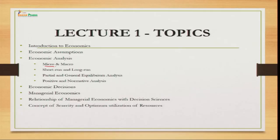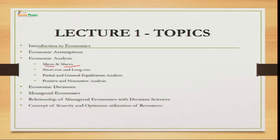Thereafter, we will talk about economic analysis. Here we are going to talk about micro and macro analysis, which is very important for us to understand, because economics is particularly divided into two broad areas: microeconomics and macroeconomics. We will also talk about short run and long run analysis, partial and general equilibrium analysis, and positive and normative analysis. These are the four broad categories of analysis we are going to understand. Thereafter, we will talk about economic decisions — decisions which help you understand what to produce, when to produce, how to produce, whether the resources are used economically, and whether the economy is growing or not.